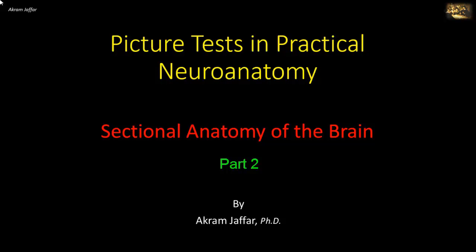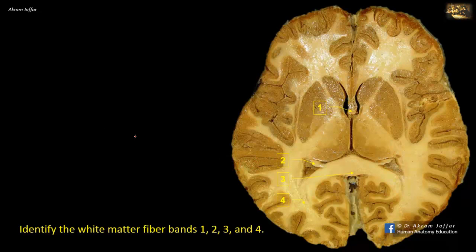Now, I will deal with the sectional anatomy of the brain. Identify the white matter fiber bands 1, 2, 3, and 4. This is a horizontal section through the cerebral cortex at the level of the interventricular foramen showing white matter structures.